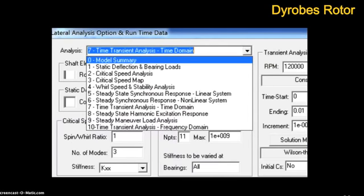Each category gives you many options of analysis to choose from. For instance, in lateral analysis, you can analyze critical speed, whirl speed, stability, and many other options. Here we'll run a critical speed analysis.